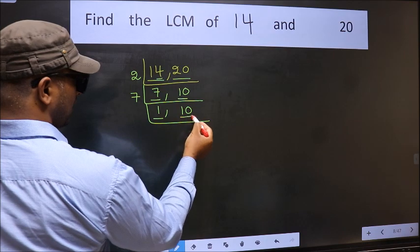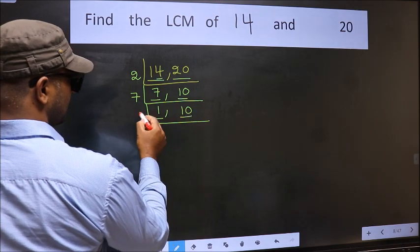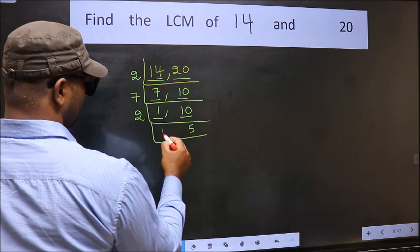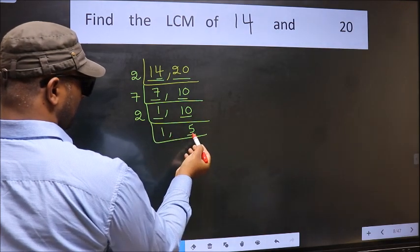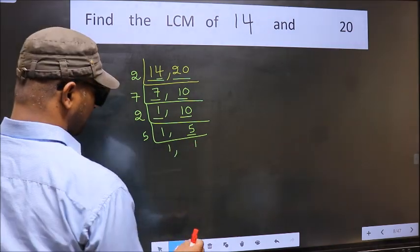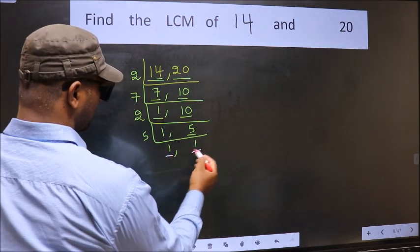So focus on the other number 10. 10 is 2 5s, 10. Now we have 5. 5 is a prime number. So 5 1s, 5. Now we got 1 in both the places.